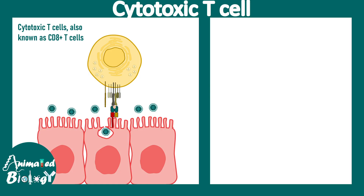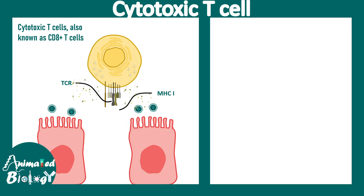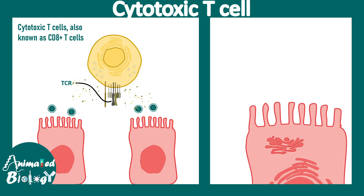These cytotoxic T cells become activated when they recognize viral or tumor antigens on class I MHC molecules. After this interaction, they produce granules containing granzymes and perforin, which kill the target cell. Let's zoom into a virus-infected cell: the virus injects its genetic material, and viral proteins are synthesized using the host cell machinery.